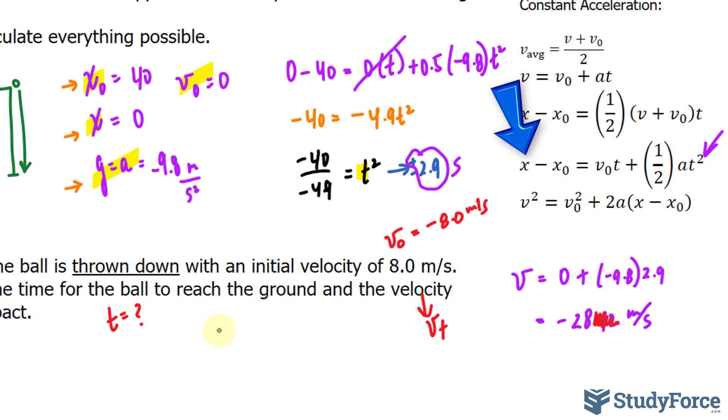We can write down 0 minus 40 is equal to an initial velocity of negative 8.0 t, plus 0.5. Remember, our acceleration is negative 9.8 t squared. And this is where your math comes into play.